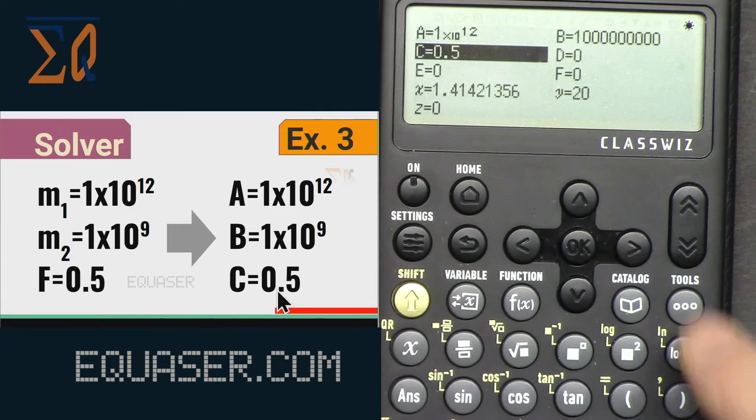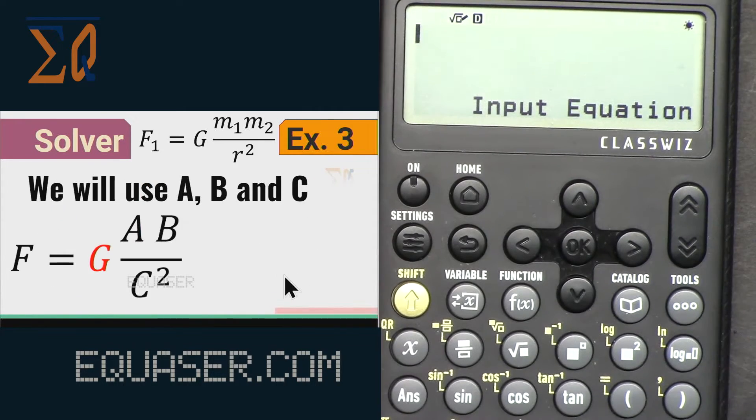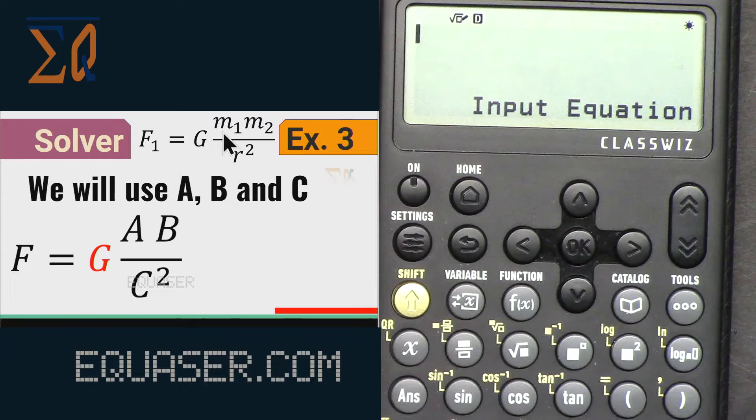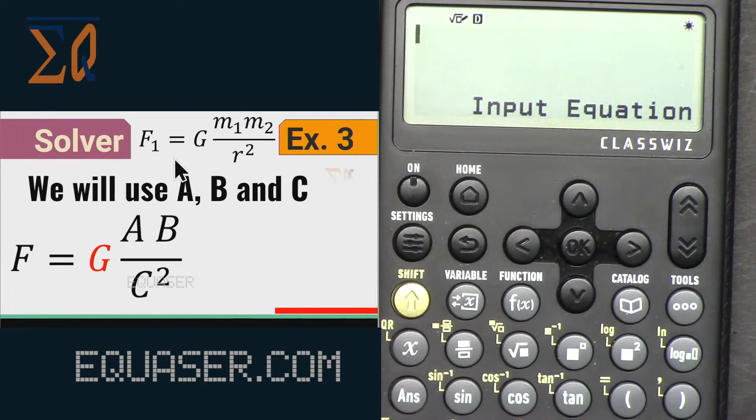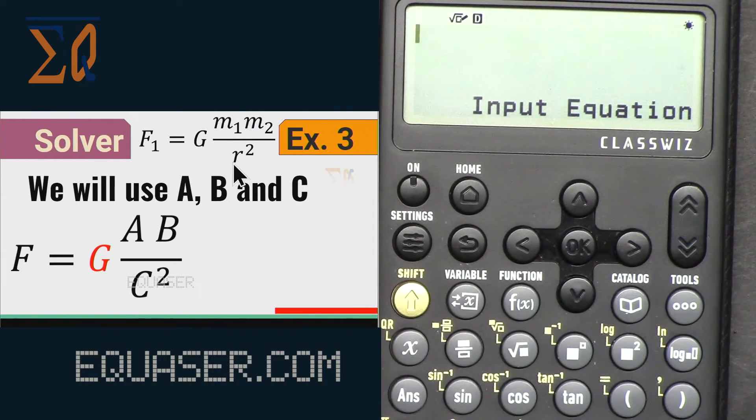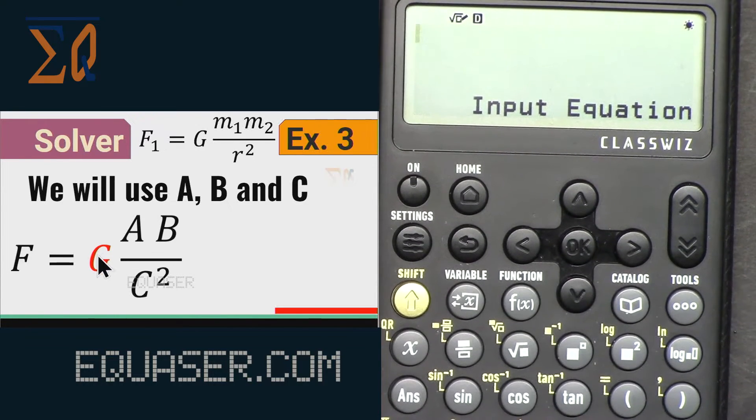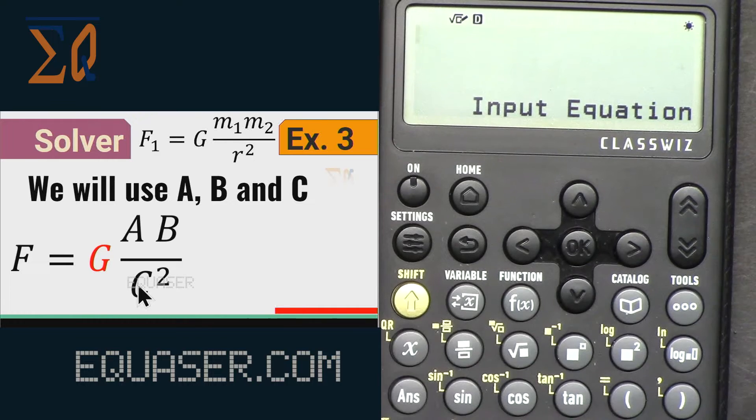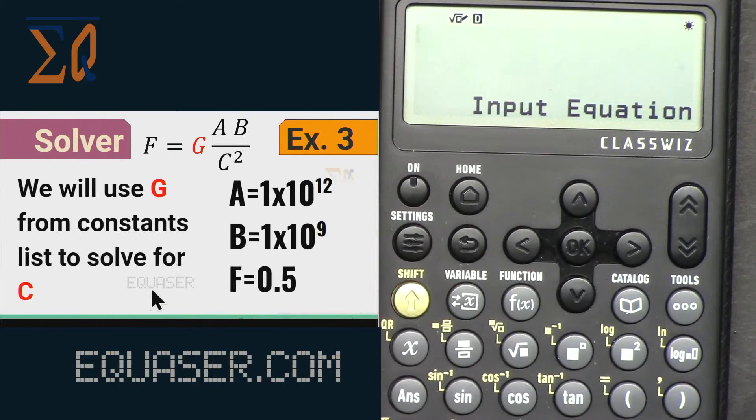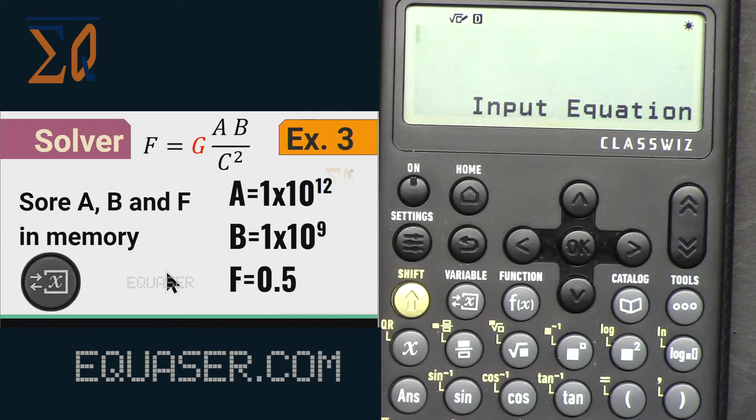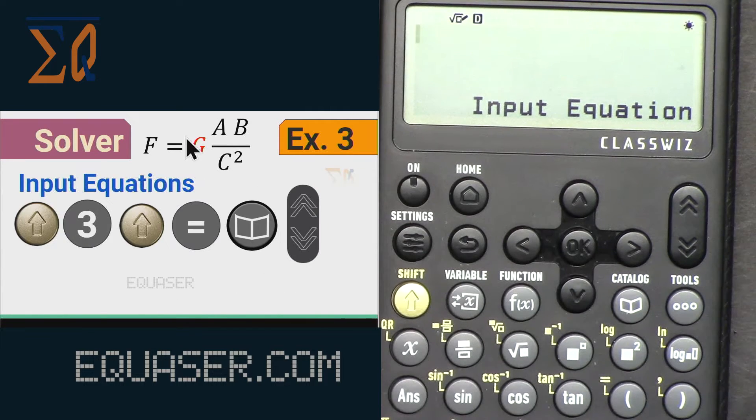Now for our formula we cannot use m1, m2 and r. So here is our formula that is modified. We have f, we have g from the constants, and a, b, and c squared. We are going to write it like this.